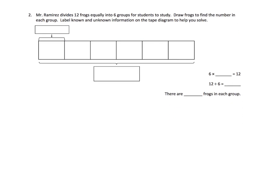Here it says Mr. Ramirez divides 12 frogs equally into 6 groups for students to study. They've drawn the tape diagram for us — it says draw frogs to find the number in each group. So 12 frogs divided up equally into 6 equal-sized groups. I'm going to draw — I'm going to be cheesy and say there's a frog. So there's 1, 2, 3, 4, 5, 6. I've passed out 1 frog into each of the 6 groups.